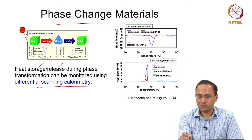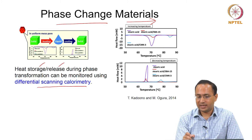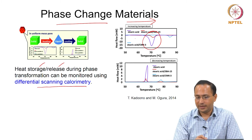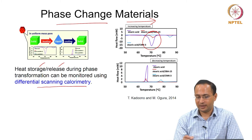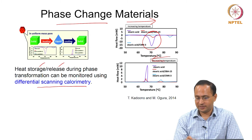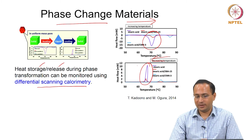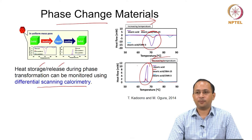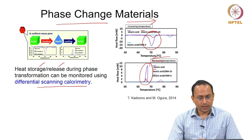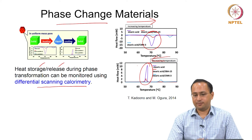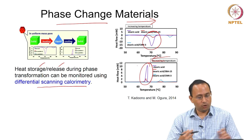In the DSC plot, as temperature is increased, you see an endothermic peak because melting takes place. When temperature is decreased, you see an exothermic peak. These kinds of changes can be captured using differential scanning calorimetry.